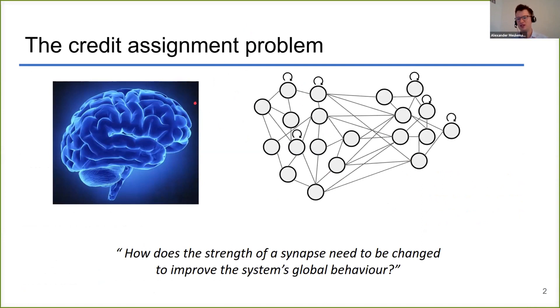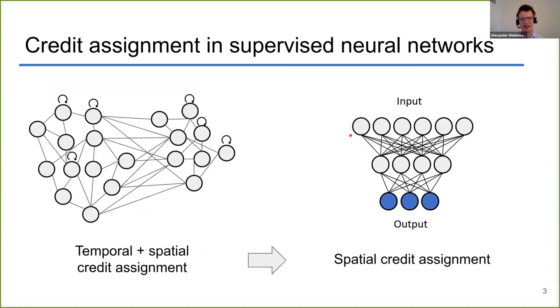Our work is centered around the credit assignment problem in the brain. You have this brain which consists of a large interconnected network of neurons which all do intermediate computations that result in an output. Then the question arises: how does the strength of a synapse need to be changed to improve the system's global behavior?